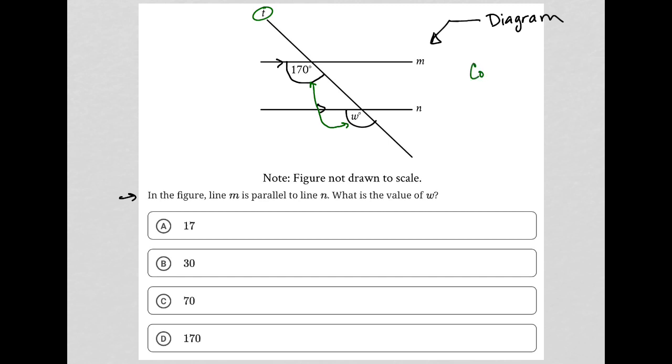One of those forms is a pair of angles called corresponding angles. And corresponding angles are congruent.